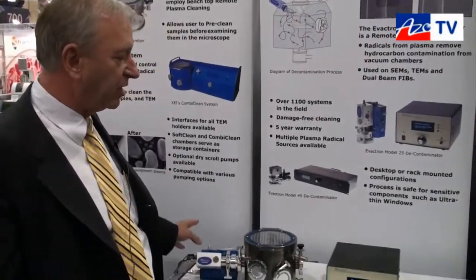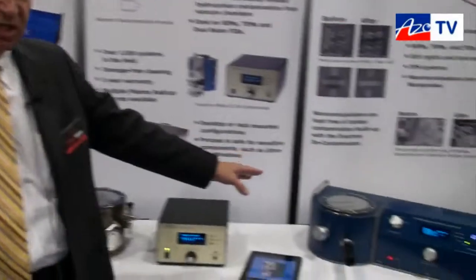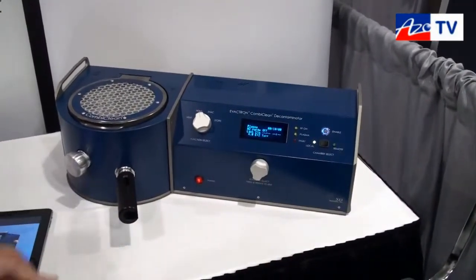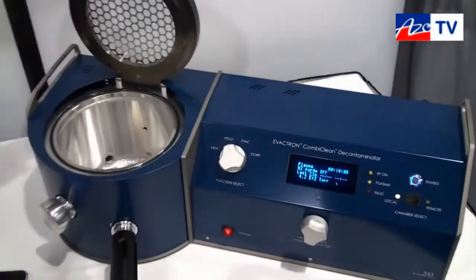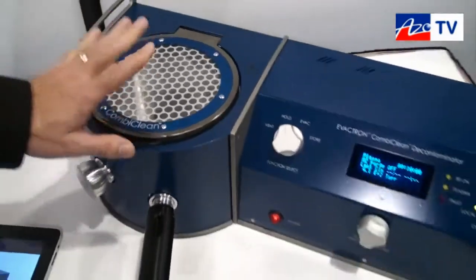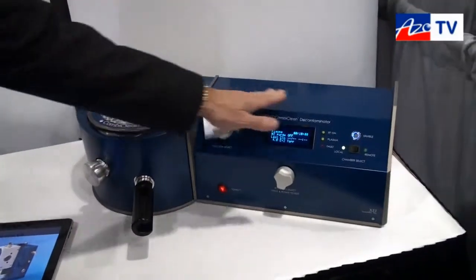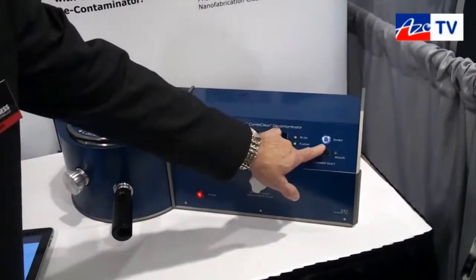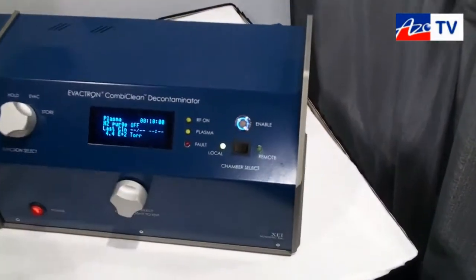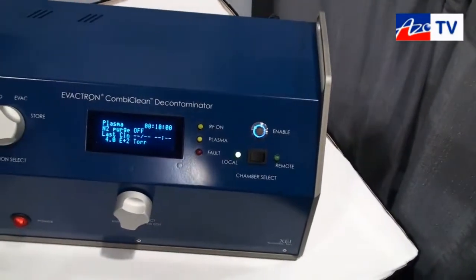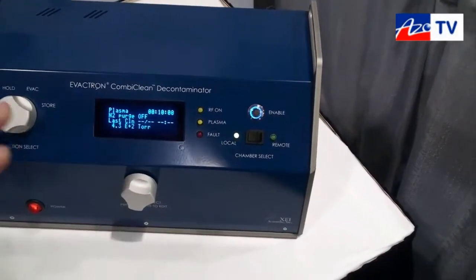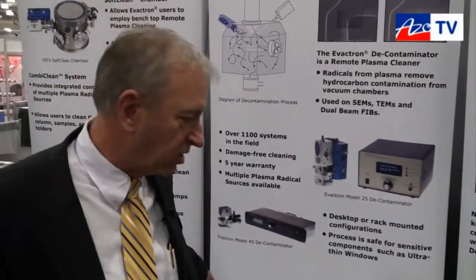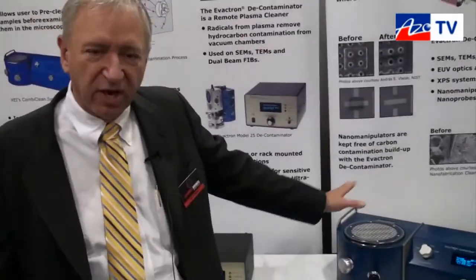We can go from that system to something that's even newer today, and that's a combined system. This is our CombiClean, and the CombiClean will allow you to insert your transmission electron microscope holders and samples, or open the chamber and put your specimens in here and clean them. The difference here is that there are two plasma radical sources — an integrated internal plasma radical source — but there's a simple switch that allows us to go between a remote and a local state. So we're driving more than one plasma radical source with one system, which is very cost effective. The combined system is about $35,000.